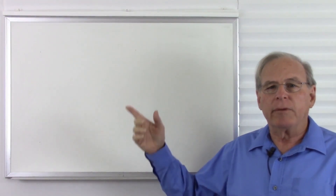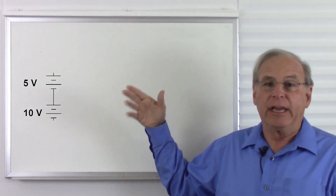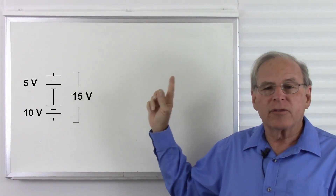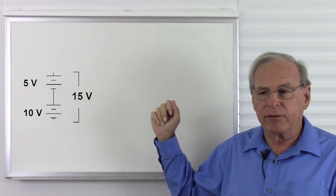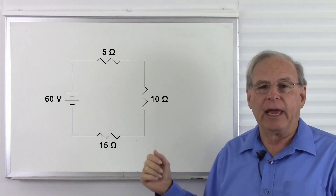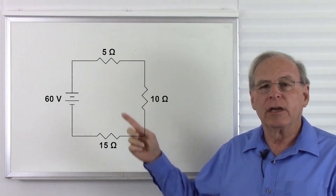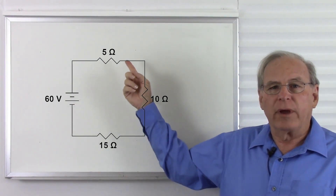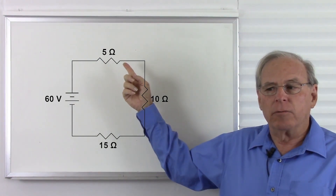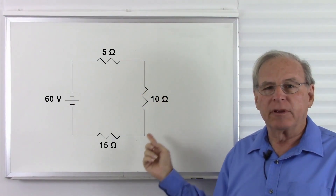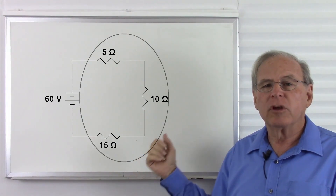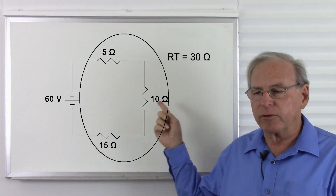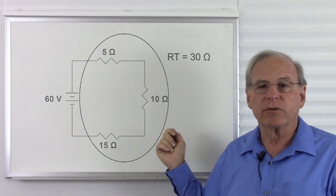Recall that when we put voltage sources end to end, in series, those voltages add together. The same thing happens with the resistance in a series circuit — the resistors add together for a total resistance. So we have 5 ohms plus 10 ohms plus 15 ohms, giving a total resistance of 30 ohms.